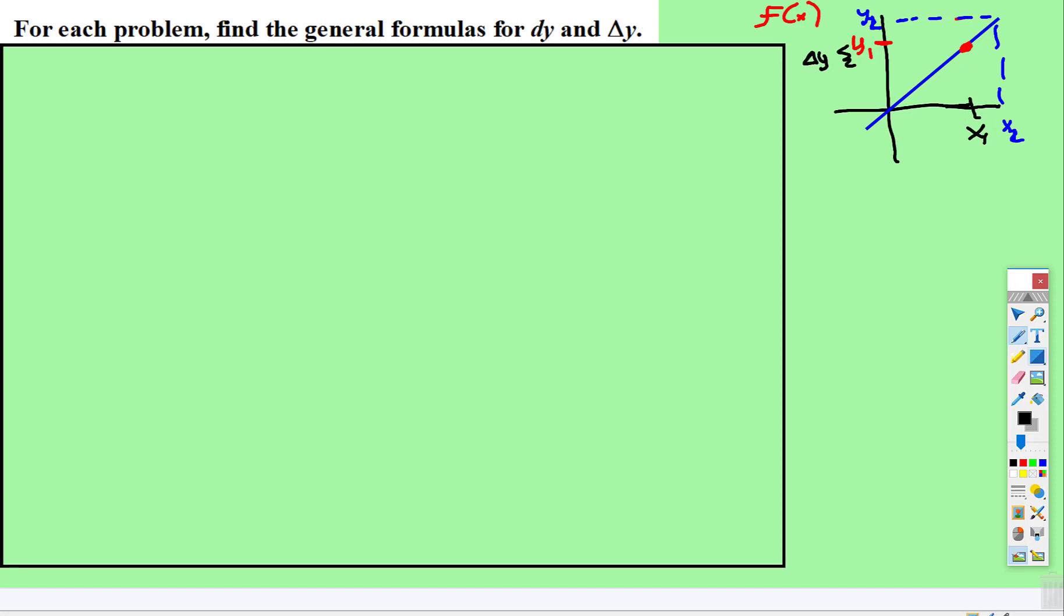So remember delta y is just the change in the y's. So this distance right here from y2 to y1 is delta y. Another way to think about that is f of x plus delta x. So here's that change right there, right? There's that delta x.